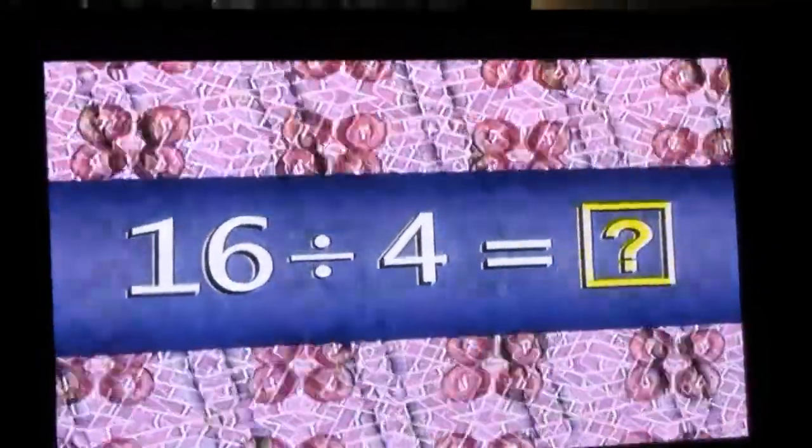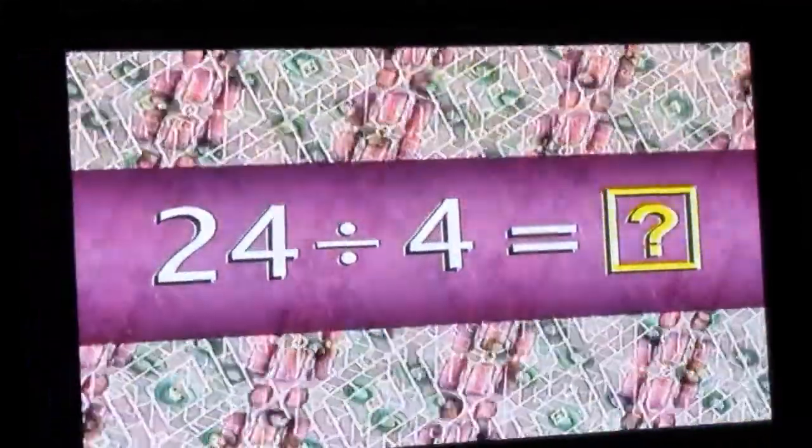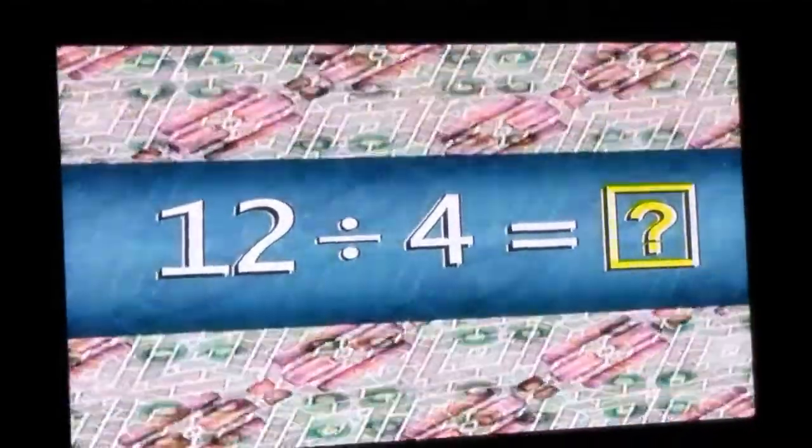24 divided by 4 is 6, 36 divided by 4 is 9, 32 divided by 4 is 8, 20 divided by 4 is 5, 12 divided by 4 is 3, 8 divided by 4 is 2, 28 divided by 4 is 7.